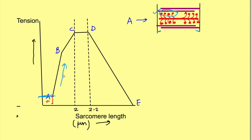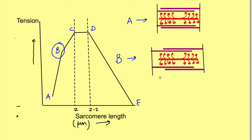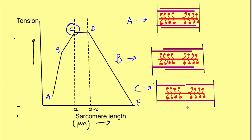As sarcomere length increases to position B, more active sites on actin are able to interact with the myosin heads and more shortening of the sarcomere can occur. So the force of contraction and tension generated is greater. At a sarcomere length of approximately 2 micrometers, almost all myosin heads can interact with the active sites of actin — and that is why the tension generated is maximum at this point.